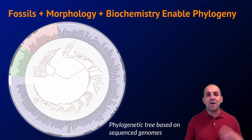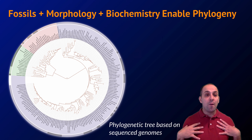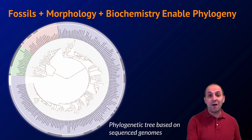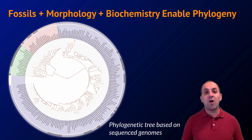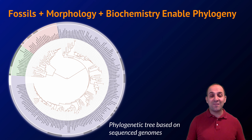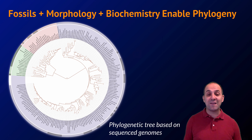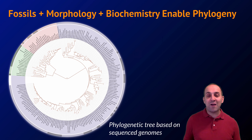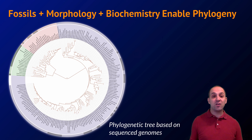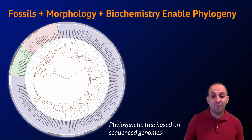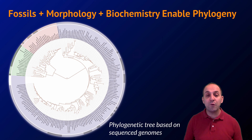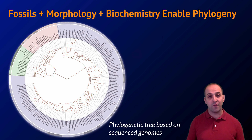The combination of fossil evidence with morphological comparisons and biochemistry analysis enables phylogeny — the branch of biology that seeks to organize all currently living species in a universal tree of life starting with our last universal common ancestor. The diagrams this process generates are called phylogenetic trees, and this is a tree based on the sequenced genomes of all the species shown.